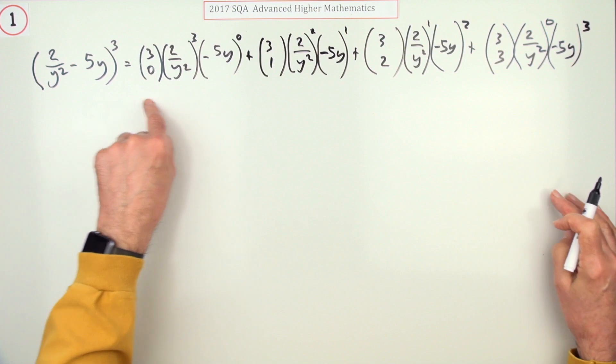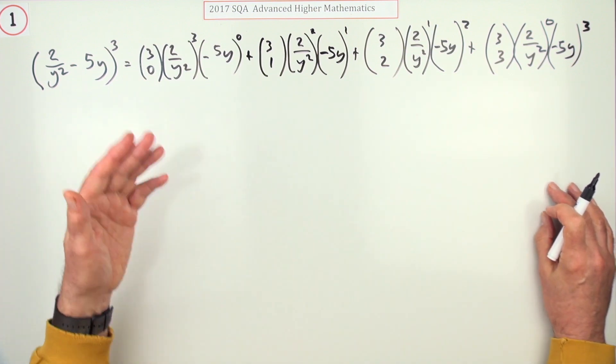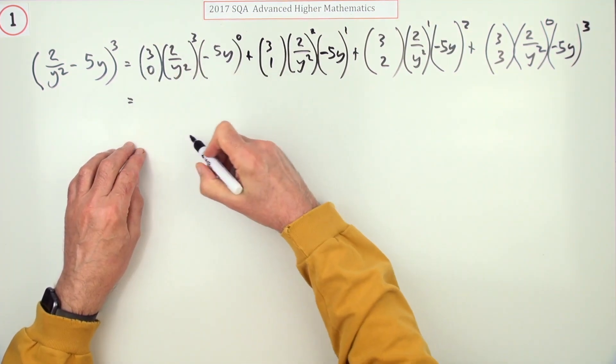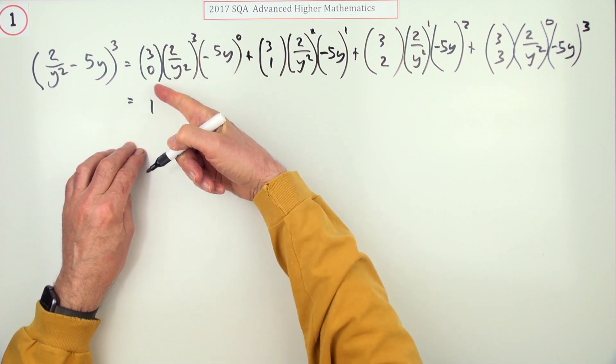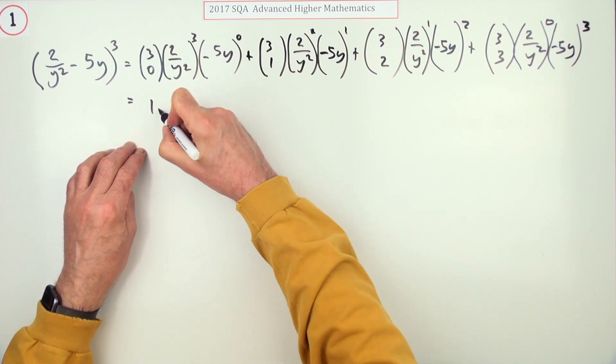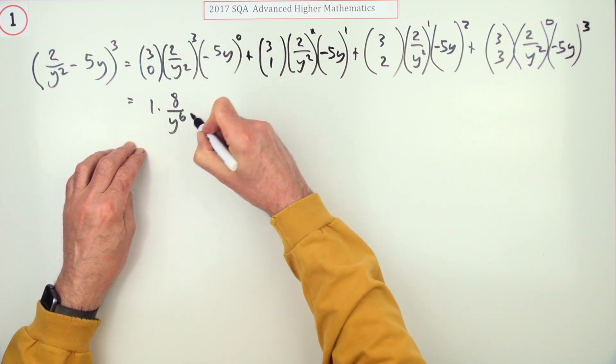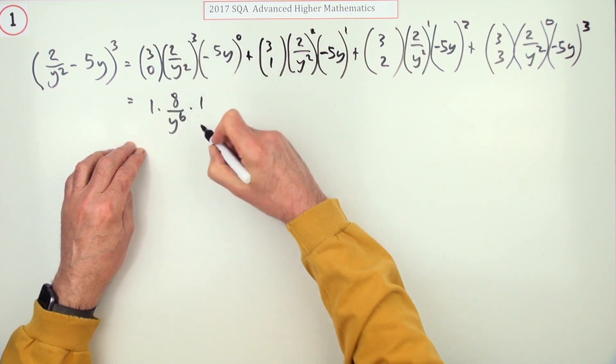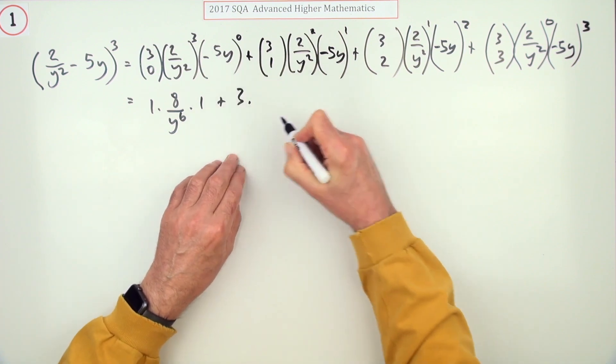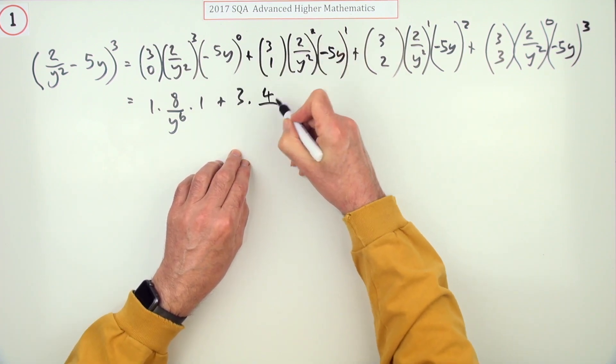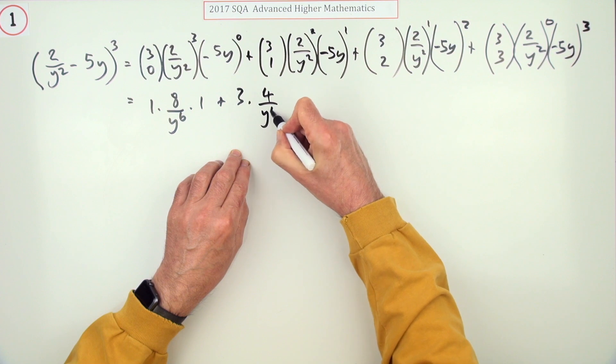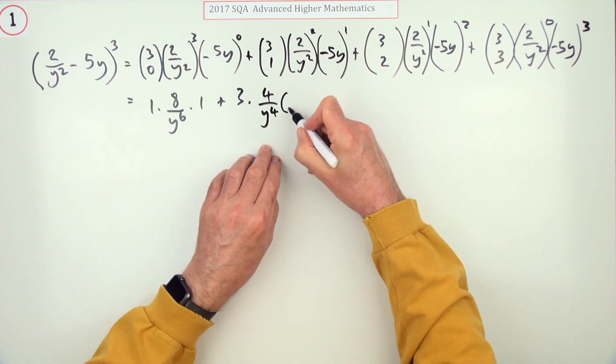Writing all that out gets you the first mark. Now let's start working it out. The coefficients: 1, 3, 3, 1. So one times 2³ is 8, y² to the power three would be y to the power six, and anything to the power zero is one. Next: 3 times 2² is 4, y² squared is y⁴, and this goes to negative 5y.